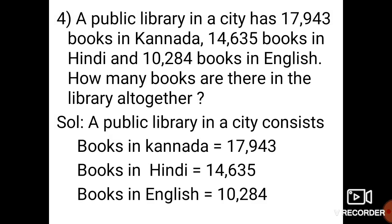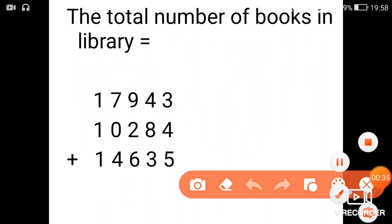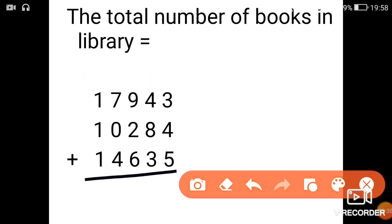Fourth problem: a public library in a city has 17,943 books in Kannada, 14,635 books in Hindi and 10,284 books in English. How many books are there in the library altogether we need to find. So first we'll write down the given data. A public library in a city consists: number of books in Kannada is 17,943, number of books in Hindi is 14,635, and number of books in English is equal to 10,284. So we'll calculate all the number of books together to get the total number of books present in the library.